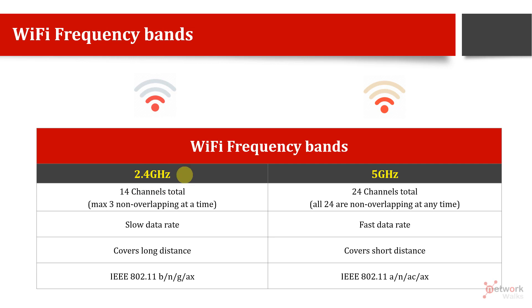From basic physics, we know that when frequency is low, the signal can travel a longer distance. But when frequency is higher, we get a higher data rate — however, you have to be very close to the source. As you move away, the signal drops quickly because high frequency means more oscillations, more cycles per second, and more opposition from the environment. So 2.4 GHz gives slow data rate but covers long distance; 5 GHz is fast but covers short distance.